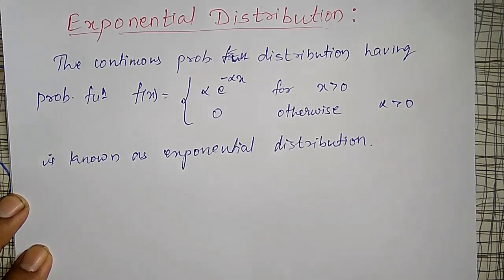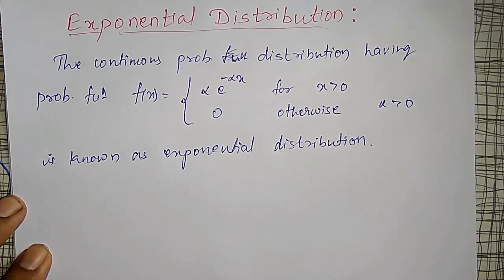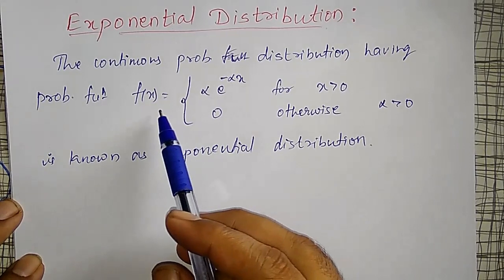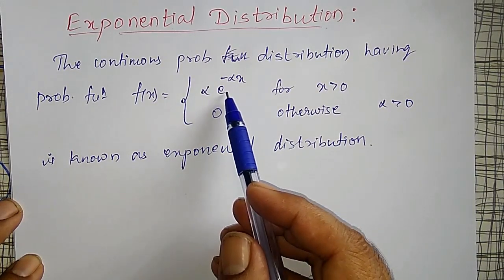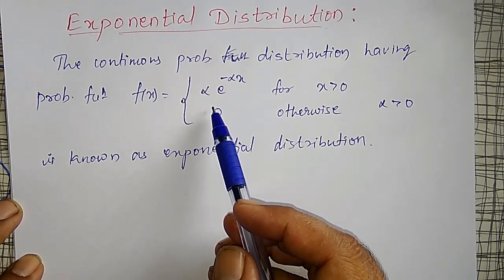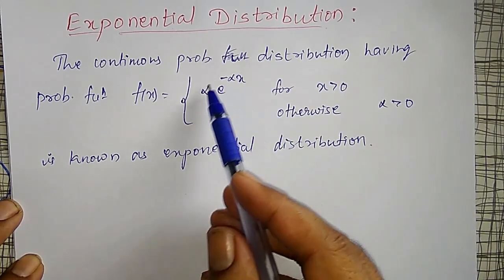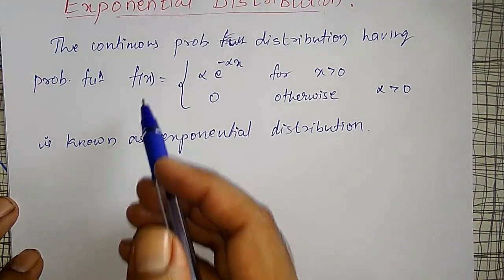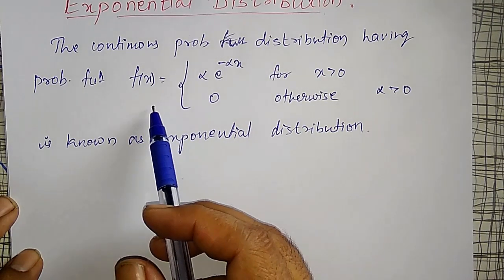We can show whether this exponential distribution holds the conditions of a probability distribution or not. Since the function is exponential, for any x value it is always greater than or equal to 0, and integrating between minus infinity and plus infinity gives 1. Therefore, this is a valid probability density function.